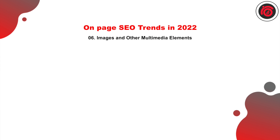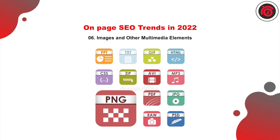Images and other multimedia elements should be well embedded and optimized, because improper optimization of images or other multimedia such as videos, presentations, or images can lead to high page load sizes and that can disrupt the SEO journey. Hence, they should be minimized, compressed, and optimized from time to time.